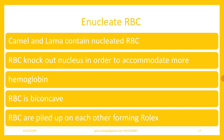RBCs are enucleated because the shape of the RBC is biconcave. Because there is very little space inside the RBC, the nucleus of mammalian RBCs is simply pushed out in order to accommodate more hemoglobin. Camel and llama are the only mammals that contain nucleated RBCs. RBCs lose their nucleus in order to accommodate more hemoglobin.